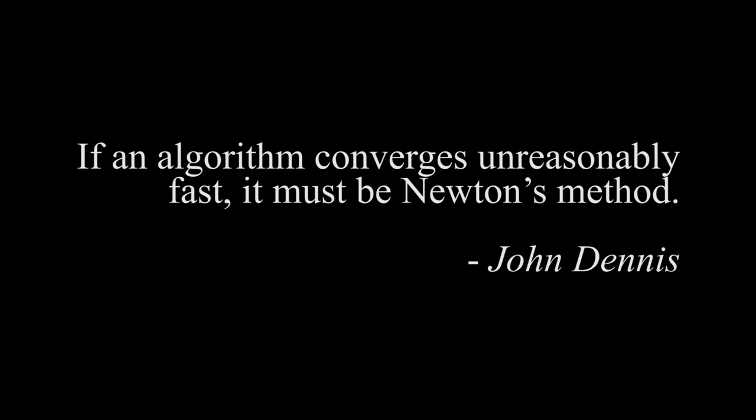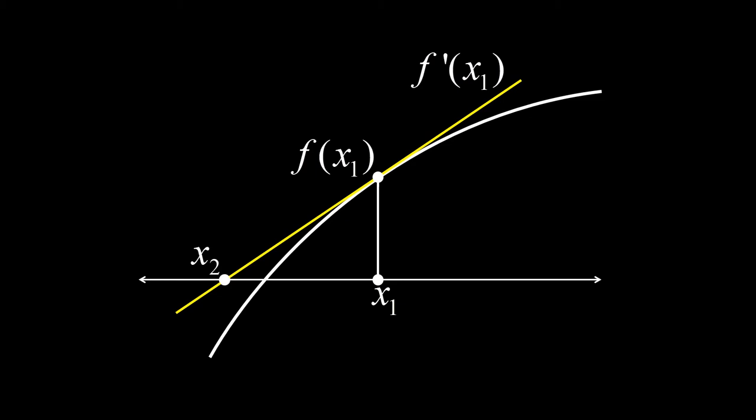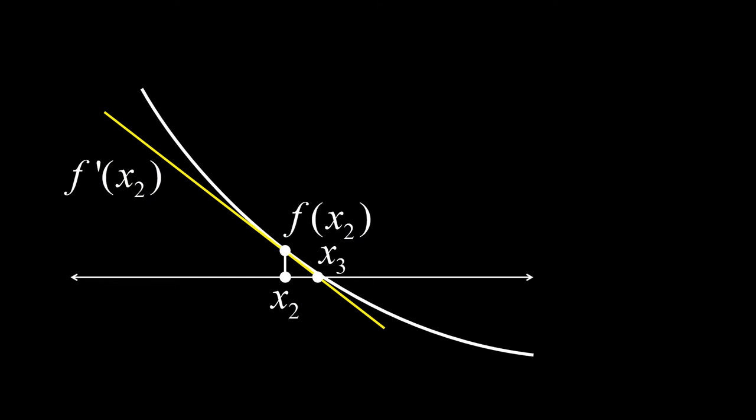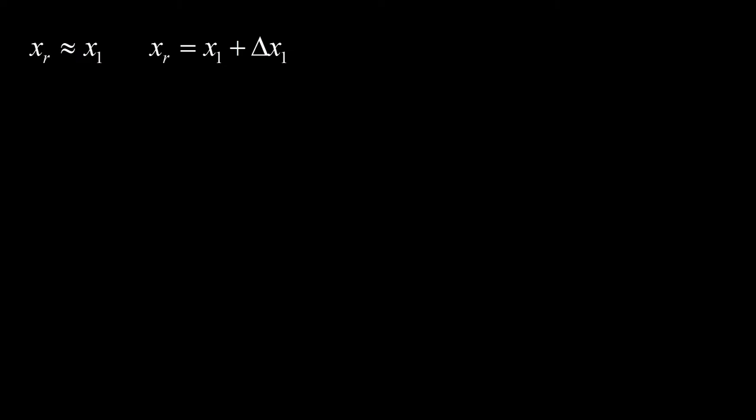Ang graphical interpretation ng Newton-Raphson method ay limitado lang sa pagkuha ng real roots. Pero kung iisipin natin na isa itong linear approximation method, mas general ang application niya. Kung ang x1 ay isang estimate kay xr, pwede natin isulat si xr bilang x1 plus some error or displacement from x1 na delta x1. Pero ano ngayon itong delta x1? Since xr is a root, f of xr is zero.